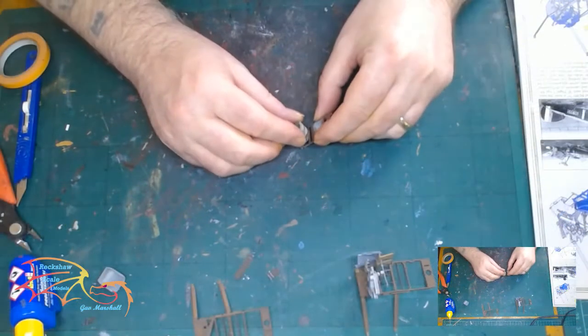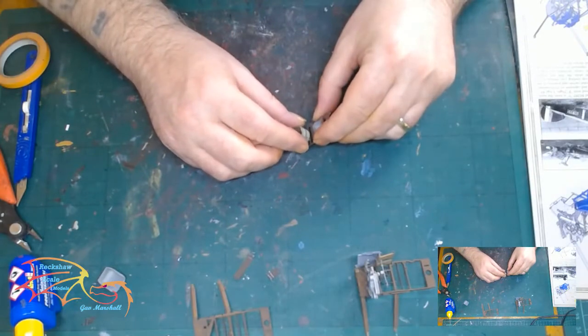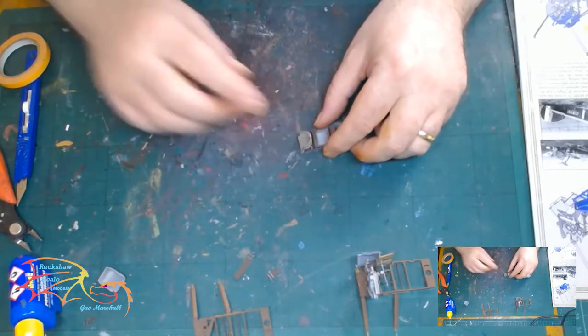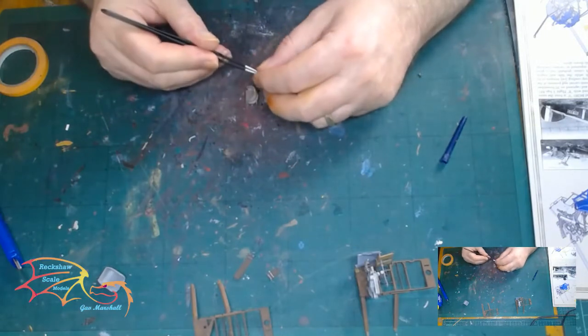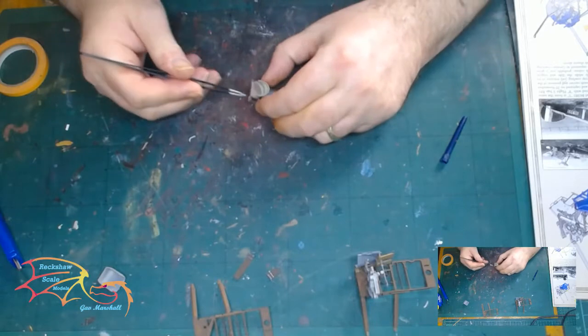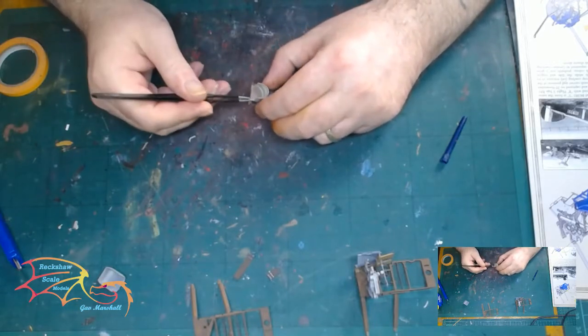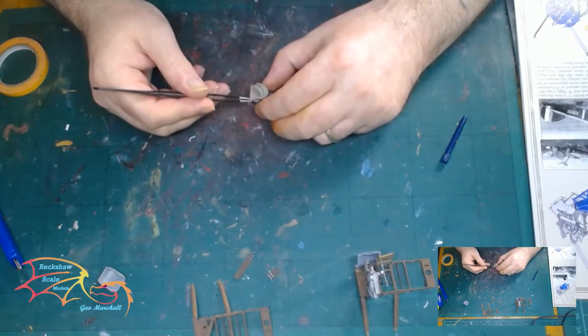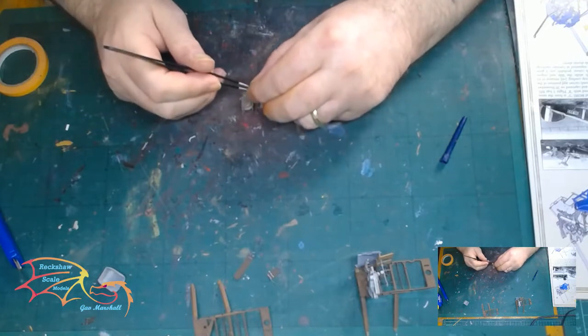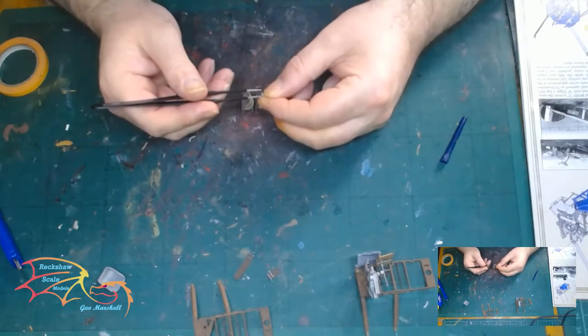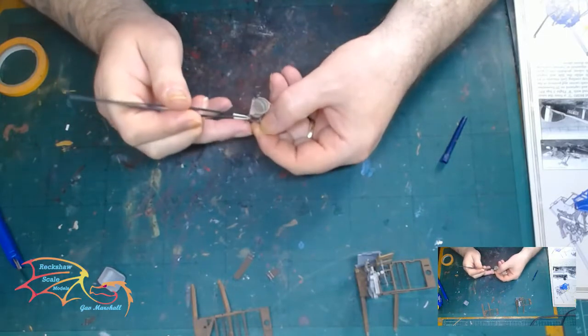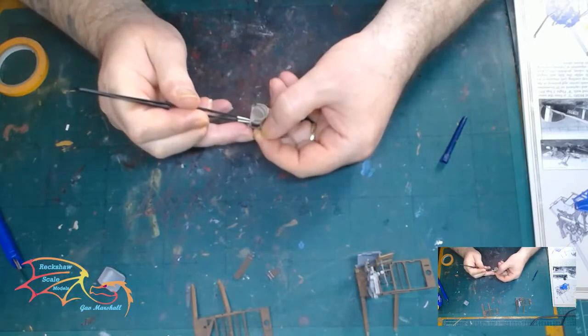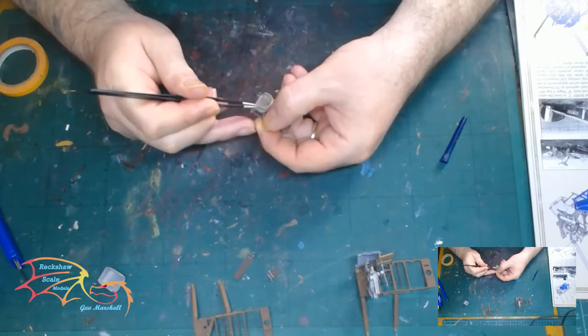Next to go on is the seat. There's a little platform for it to sit on. There are two small connecting rods that go from the seat onto the framework. These are very small, and as you can see, the camera can't really pick them up at all. If you think you can leave them off, the thing doesn't look right, so it really needs these two little items to go on.